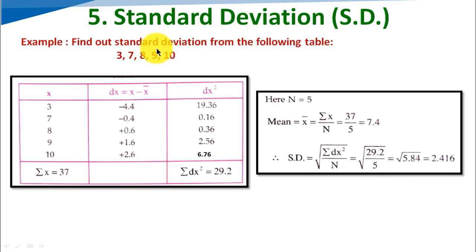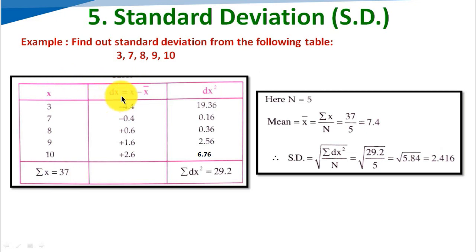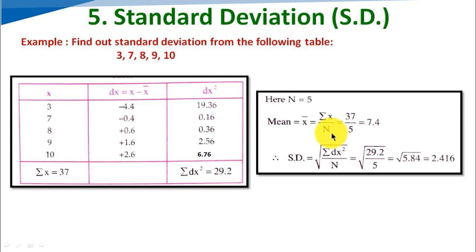For the first example, we have to find the standard deviation from the data: 3, 7, 8, 9, 10. First we find the total of x which is 37. Then we find the mean: x-bar equals sigma x divided by n, that is 37 divided by 5, which equals 7.4. So the mean x-bar is 7.4.